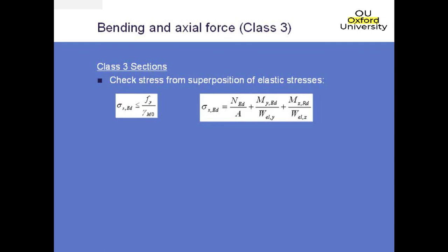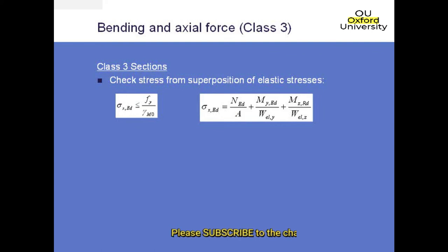W is essentially zed. You will find when you go through the Eurocodes that some of the letters have been changed — I think R is now I and things like that as well. It's little things that have changed that can be slightly annoying. W is zed essentially.